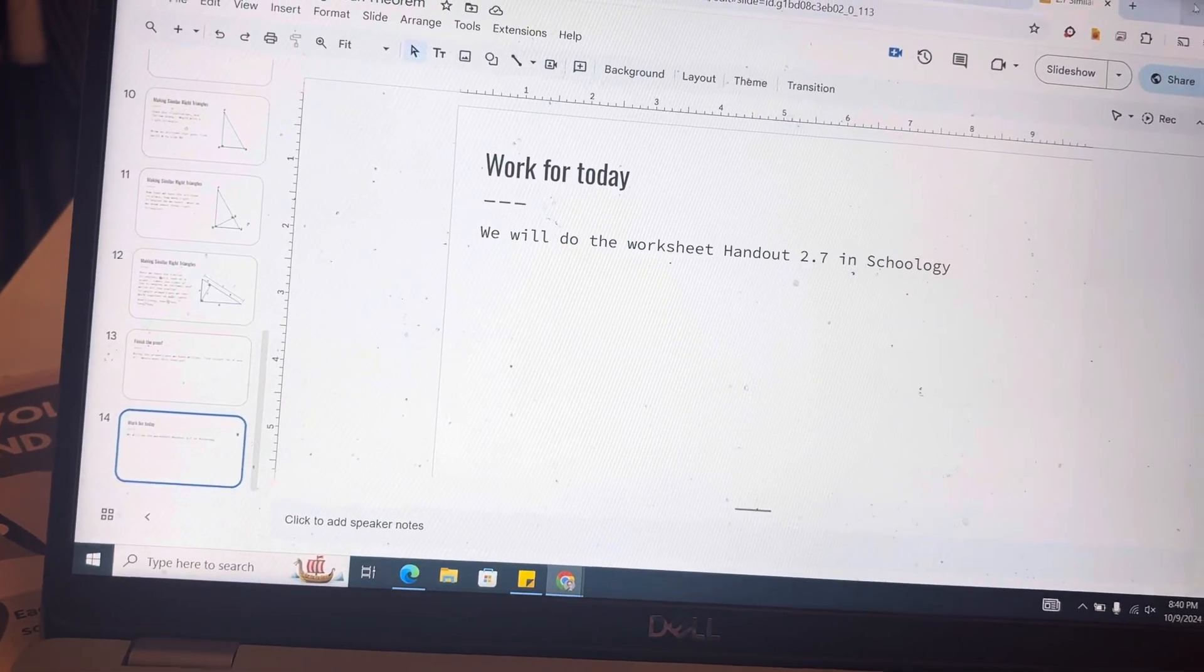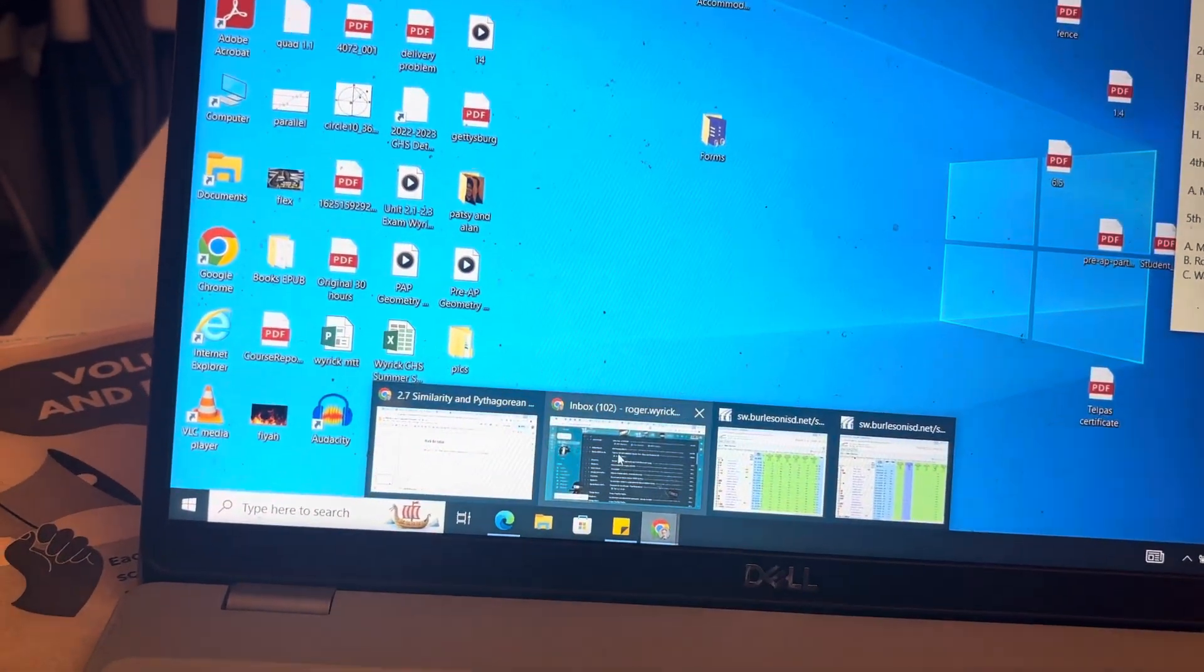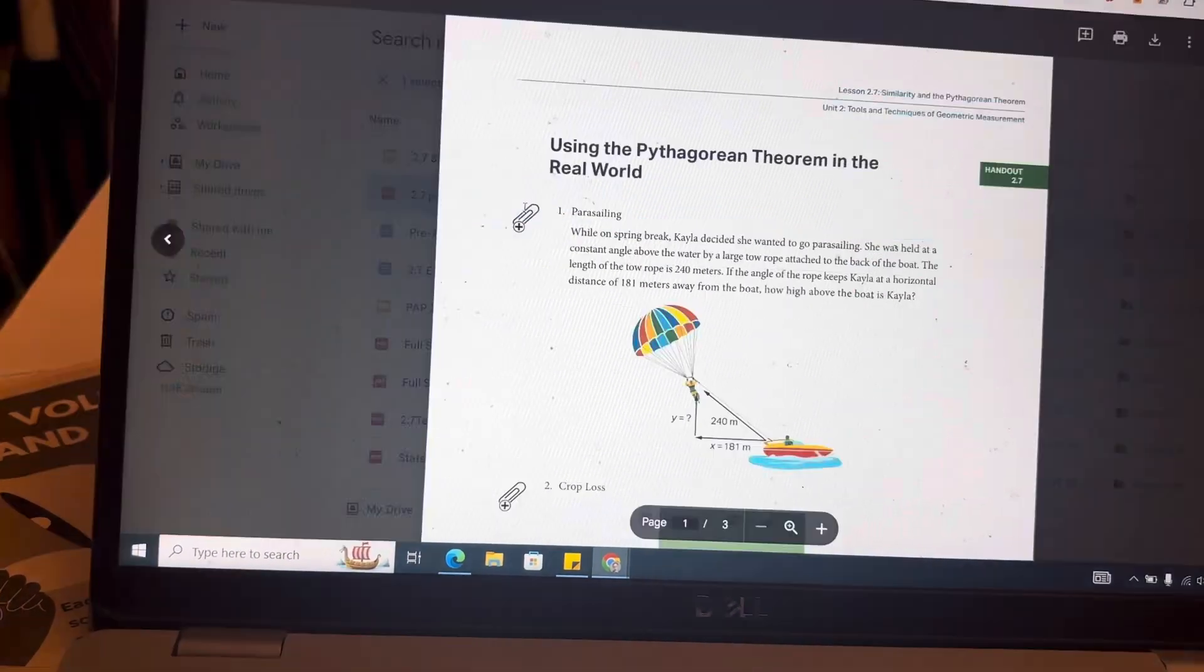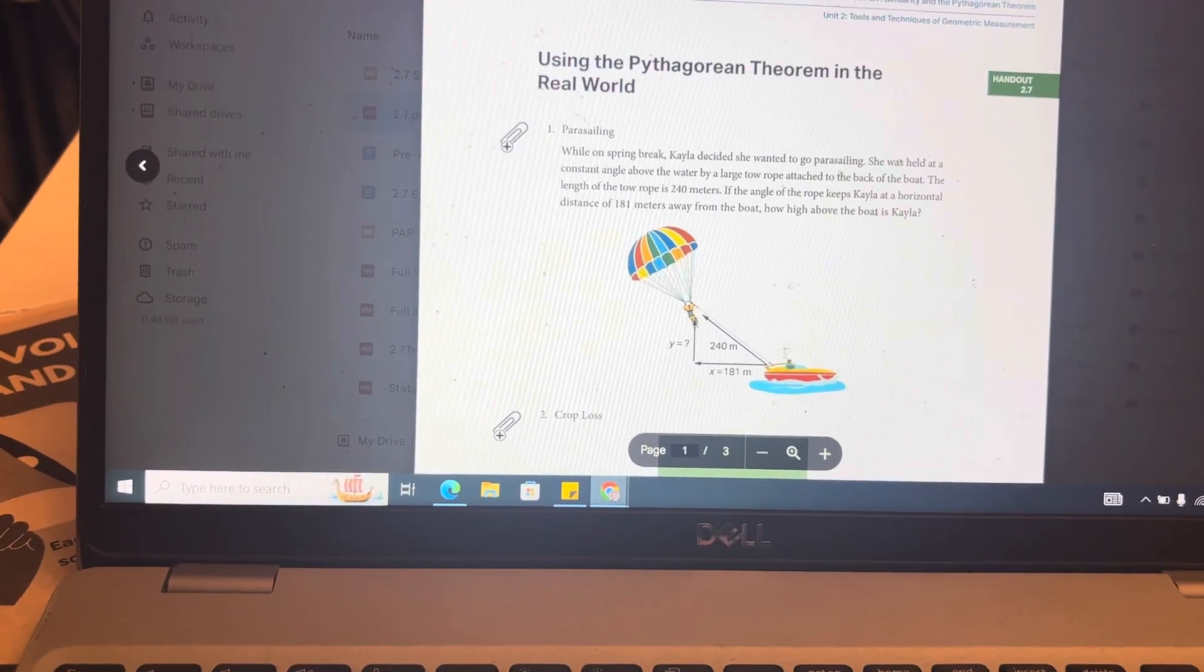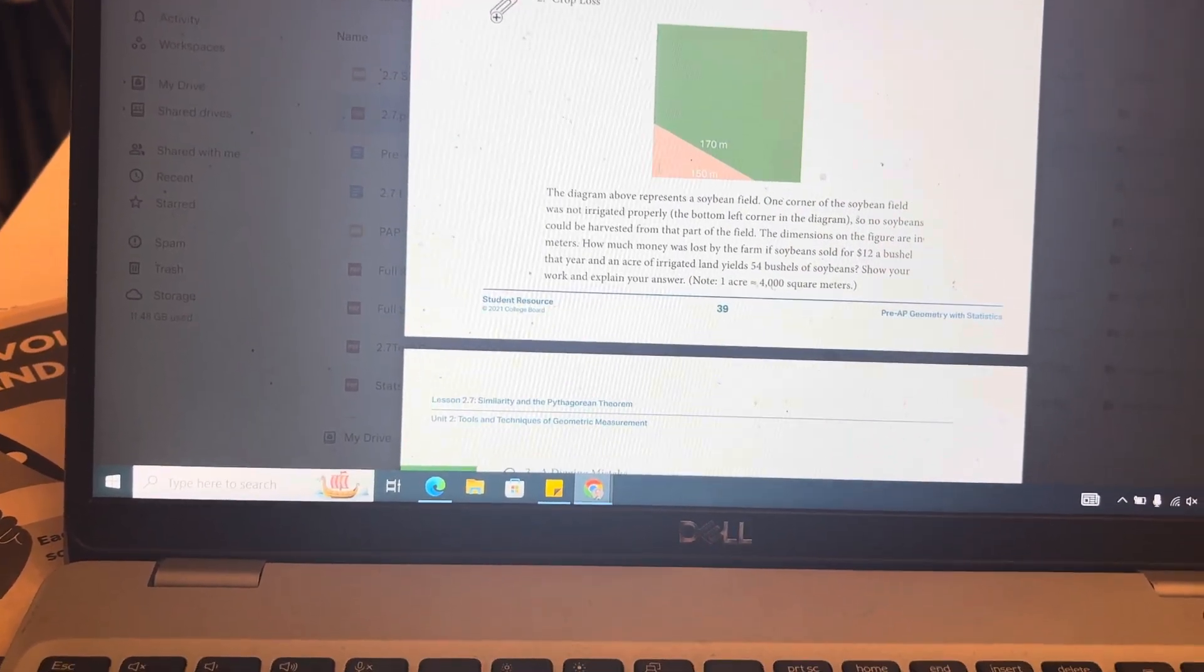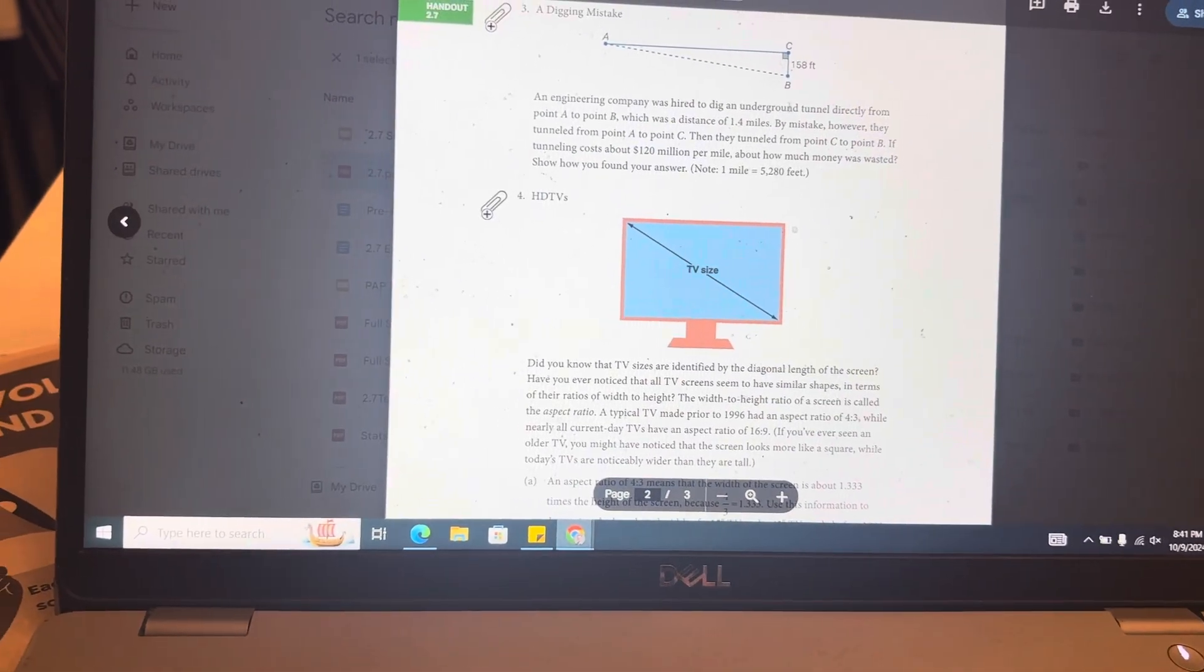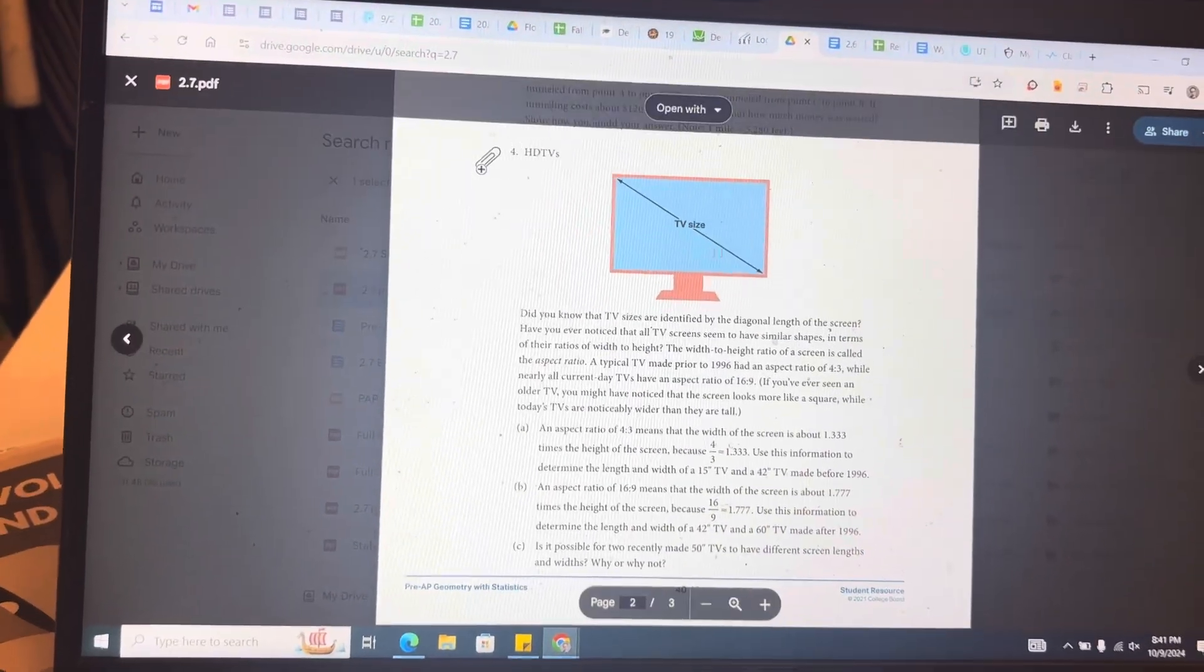And then your work is going to be the handout 2.7 in Schoology. Let me see if I can pull that up real quick. Let me see if I can take, ah, yes, 2.7. It's going to look like this. So, we have this as a right triangle. How much is this going to be? We have this as a right triangle. What's going to happen here with the conversions? We have this as a right triangle. What's going to happen with this?